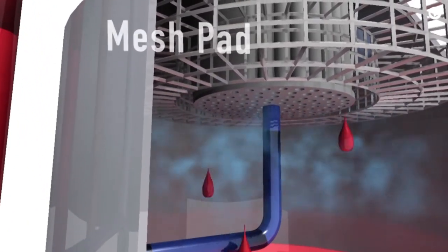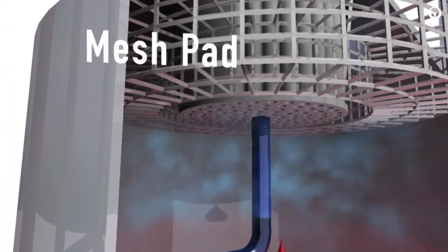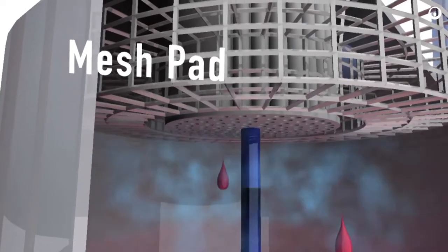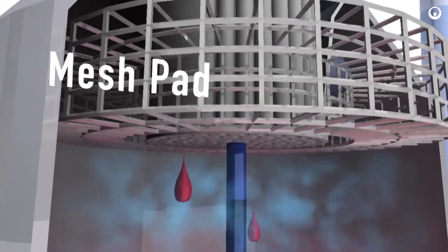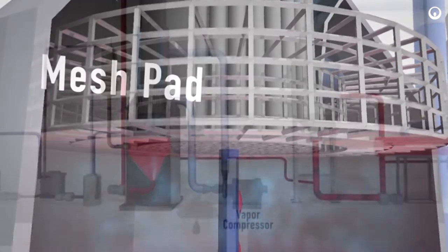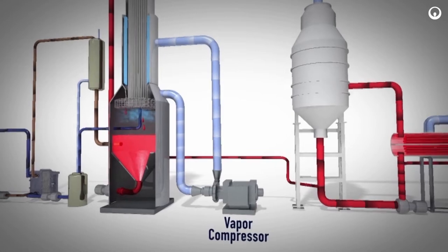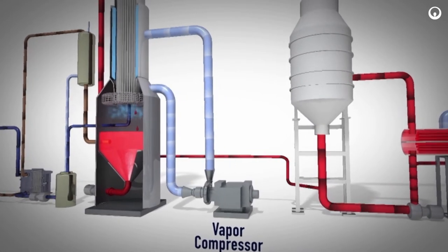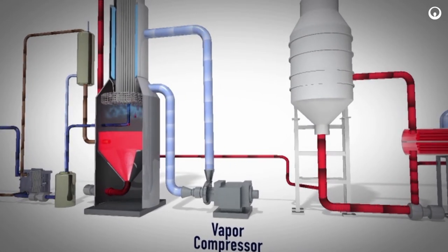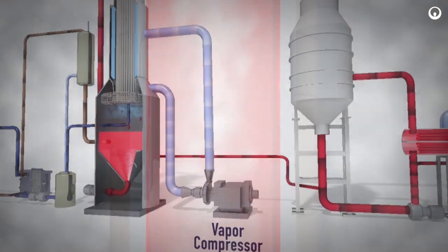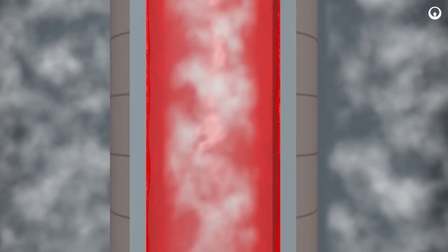Evaporated water vapor flows through the mesh pad mist eliminators. The mesh pad mist eliminators remove any brine droplets from the vapor. That vapor exiting the mist eliminators flows to the vapor compressor. The compressor increases the vapor pressure slightly. The compressed vapor flows to the shell side of the heat transfer tubes of the brine evaporator.